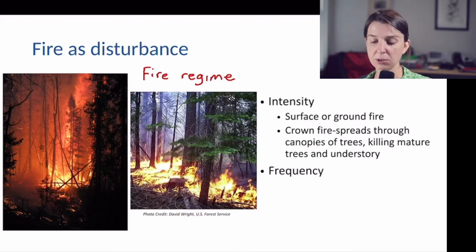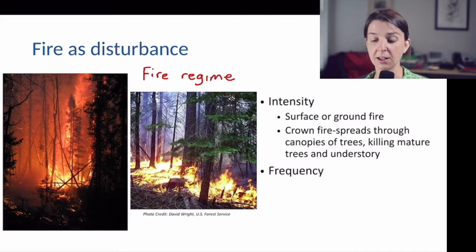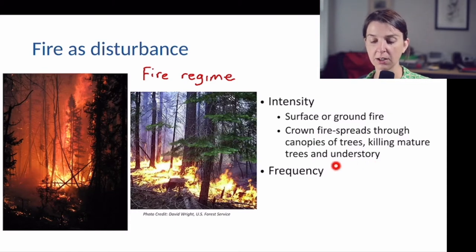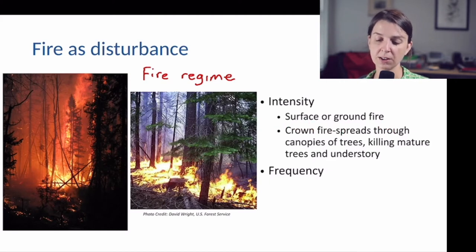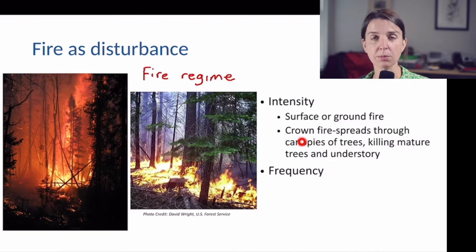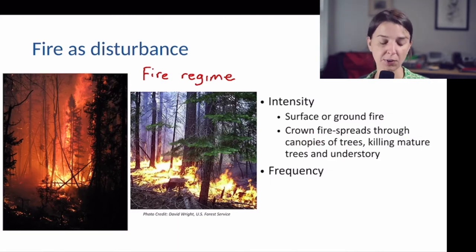Crown fires tend to kill large mature trees as well as understory plants, whereas a surface or ground fire may only kill the understory — the short stuff. Systems differ in terms of whether they see mostly surface fires or mostly intense crown fires.